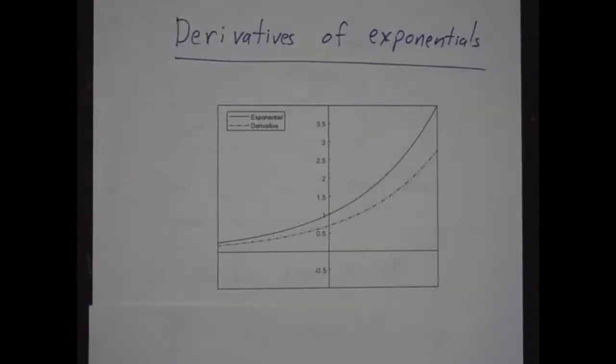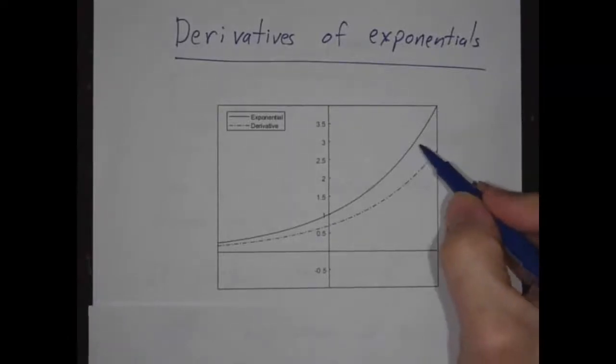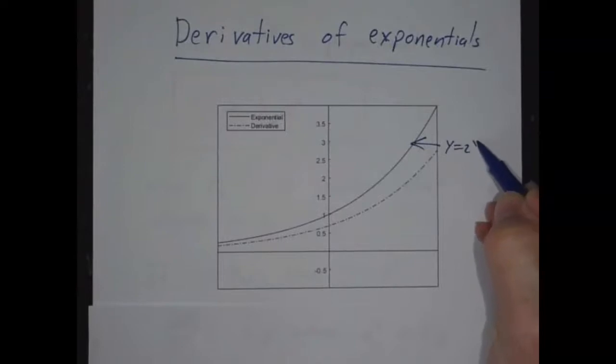OK, in this video we're going to talk about derivatives of exponential functions. So if you look at this graph, this is an exponential function. It happens to be y is 2 to the x, but the actual exponent doesn't matter a tremendous amount.